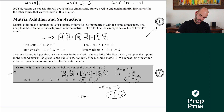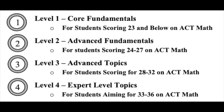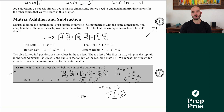If you're wondering what the numbers on the side mean, I have a four-level system throughout this entire book. It makes it super easy for students because you know exactly which lessons, concepts, and practice questions to do based on your level. Throughout the rest of this video, the numbers on the side will tell you how easy or hard the topics we're learning are.